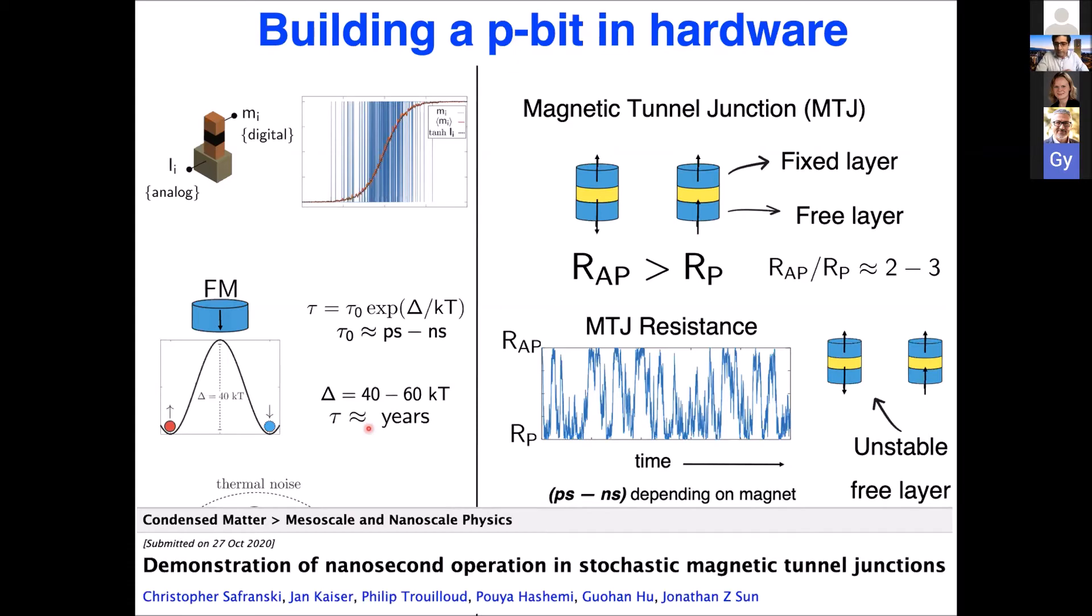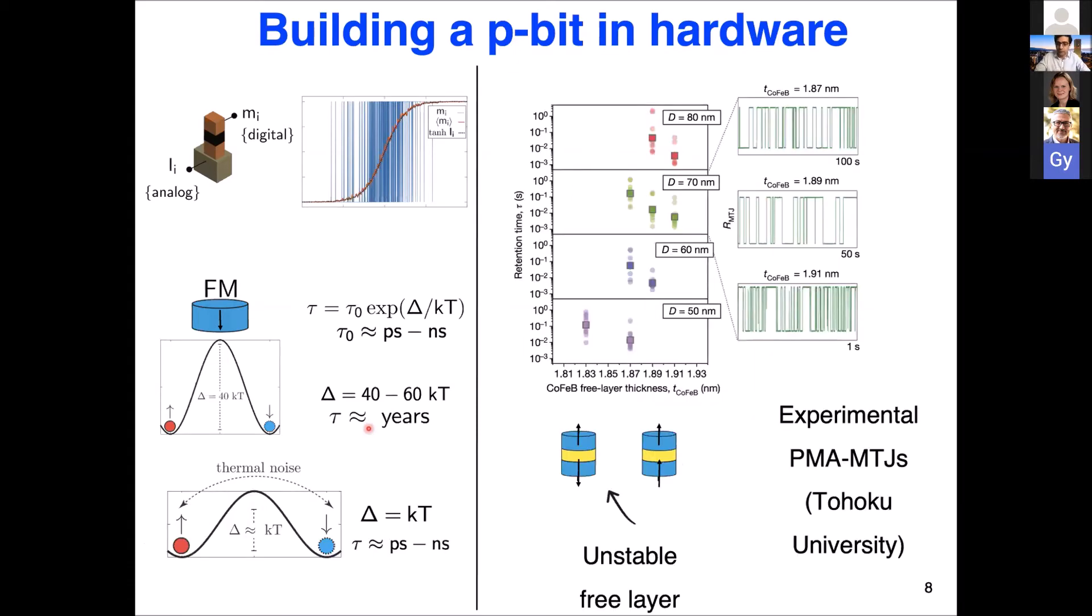We've been talking about this for a number of years now, but very recently, Jonathan Sons group and Krista Fransky from IBM, they've uploaded this paper and they've shown that these magnets can actually operate really, really fast. And this was just about a month ago. And please go ahead and check the paper if you're interested. Now, let me mention our other collaboration, which is at Purdue, we've had this collaboration with Tohoku University, with Professor Shinsuke Fukami and Professor Hideo Ono's group, where we started with slow magnets, because it's a proof of concept demonstration.